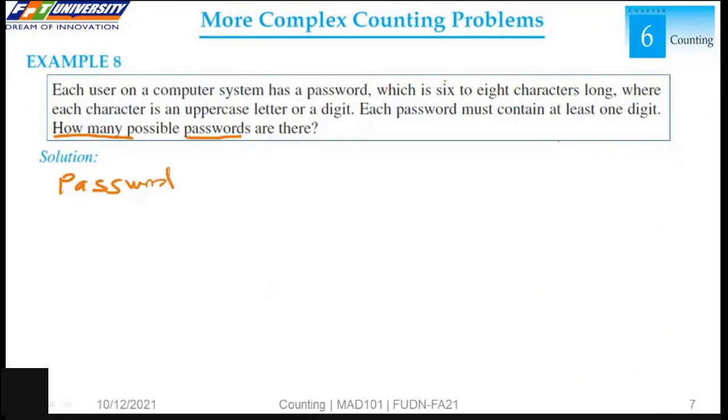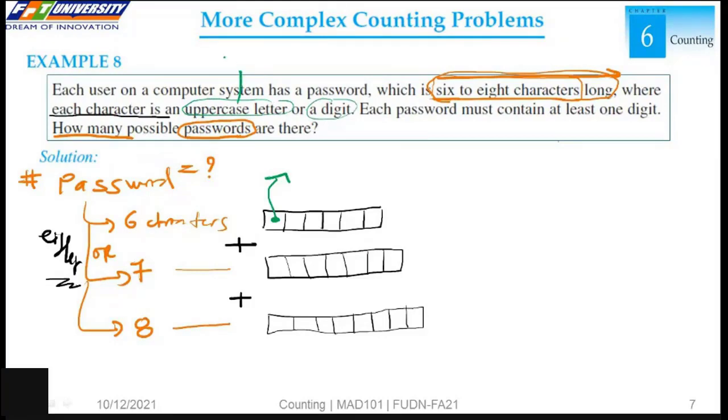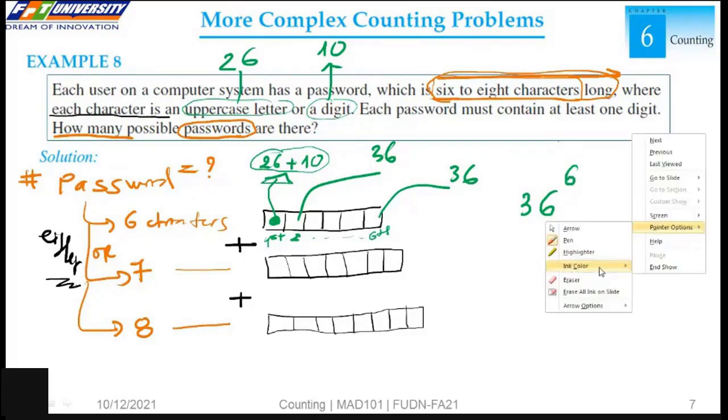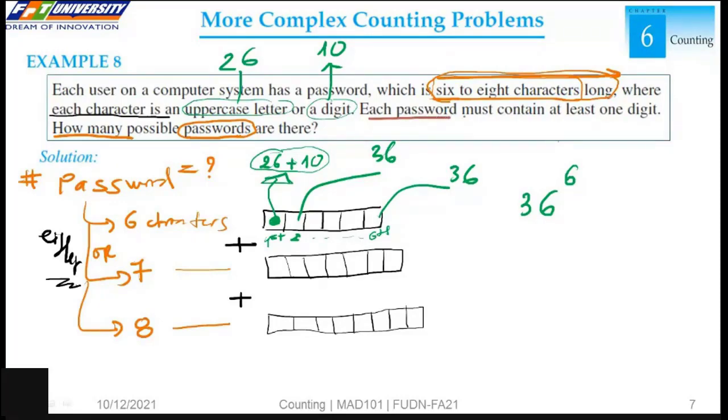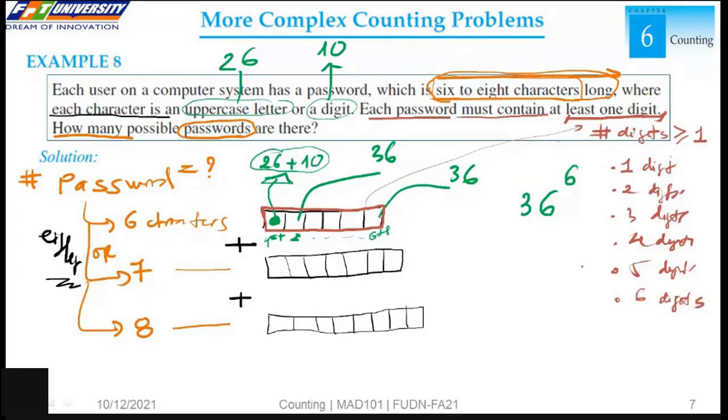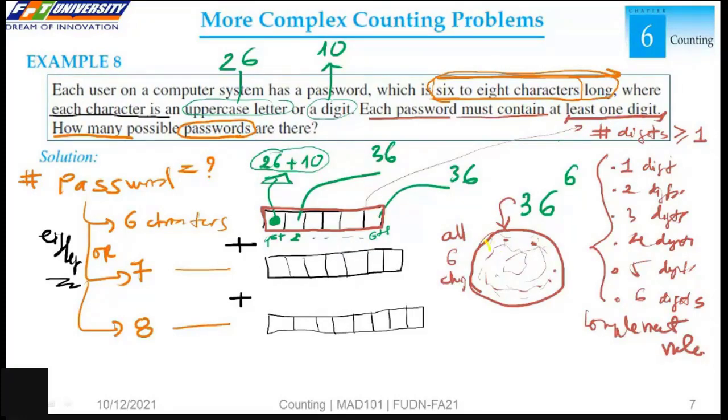For the next, the password is 6 to 8 characters long. We can choose one of 36 characters for the first and the last: 1, 2, 3, 4, 5, 6. So we have 36 to the power of 6. Let's focus on the condition: this password must contain at least one digit. In our password, the number of digits is greater than or equal to 1. I think here we use the complement rule. The set of all passwords of 6 characters can be split.